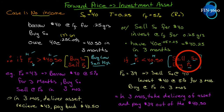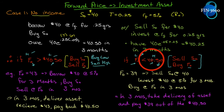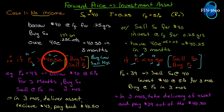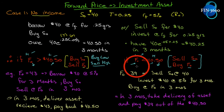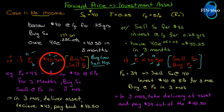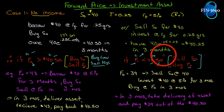If the futures price is below what our money can grow to, there is an arbitrage opportunity. Selling the spot asset pushes that price down, and buying the futures contract pushes it up until the opportunity disappears. So if the futures price is above $40.50, forces push it back down; if it's below, forces push it back up. The arbitrage argument proves the futures price must be $40.50.